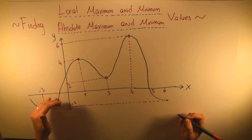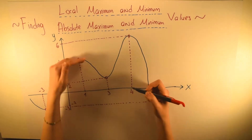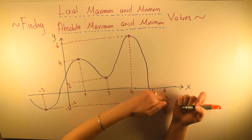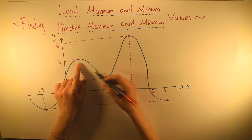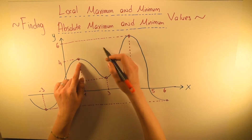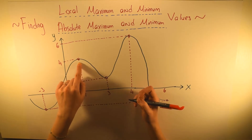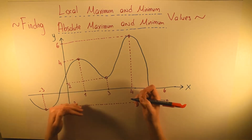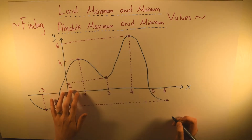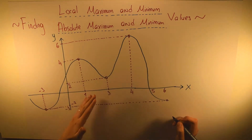This graph has the highest point here and then it goes down, and again here it has the highest point and it goes down again. So these two points are our local maximum values. The maximum or minimum over the entire function is called an absolute or sometimes global maximum or minimum.